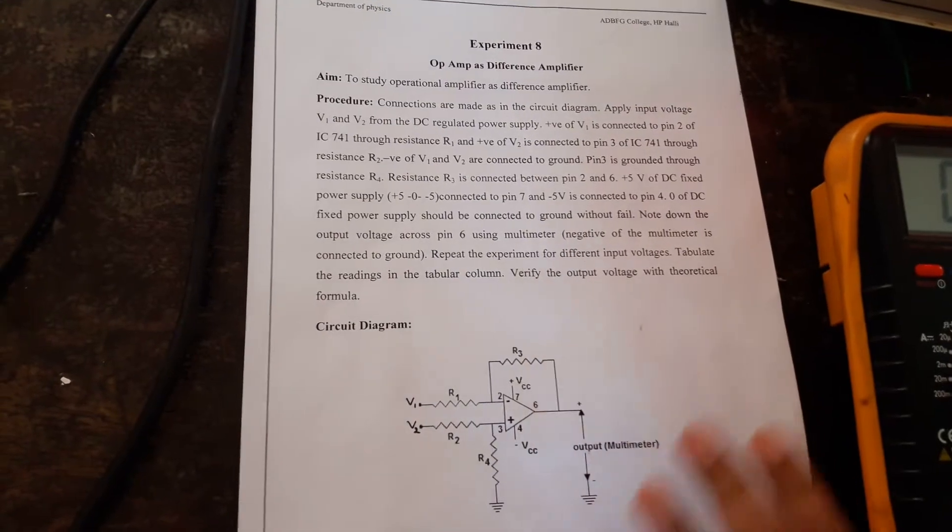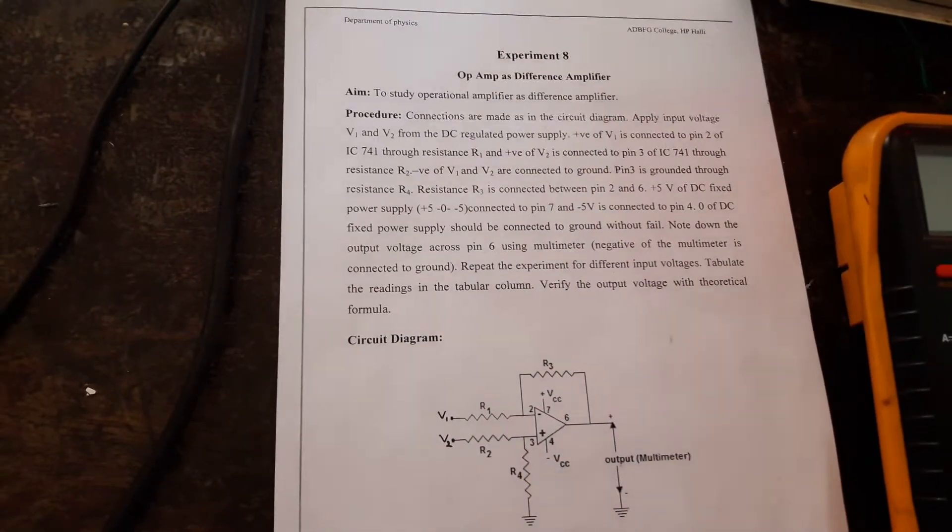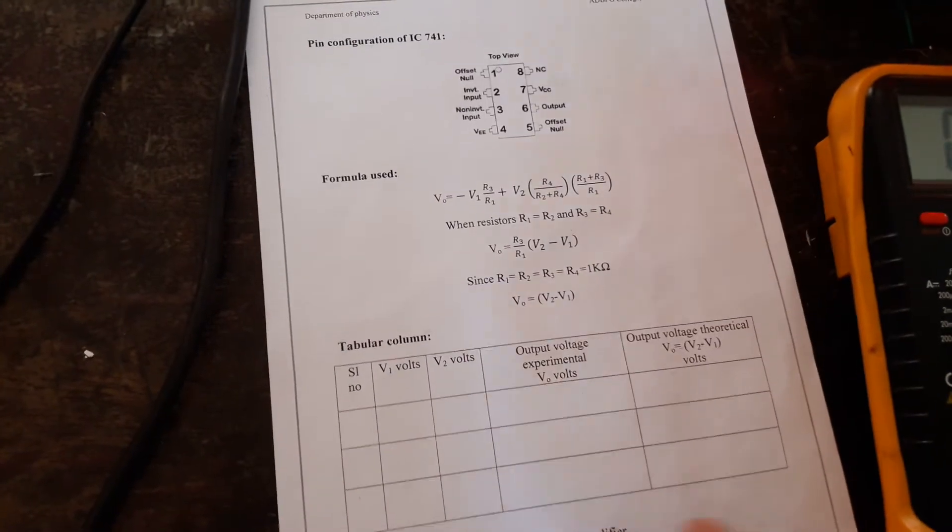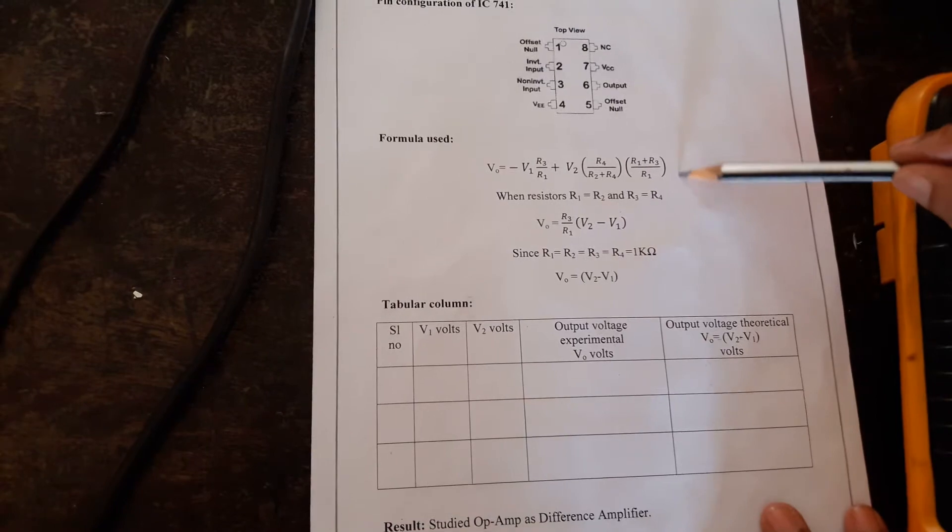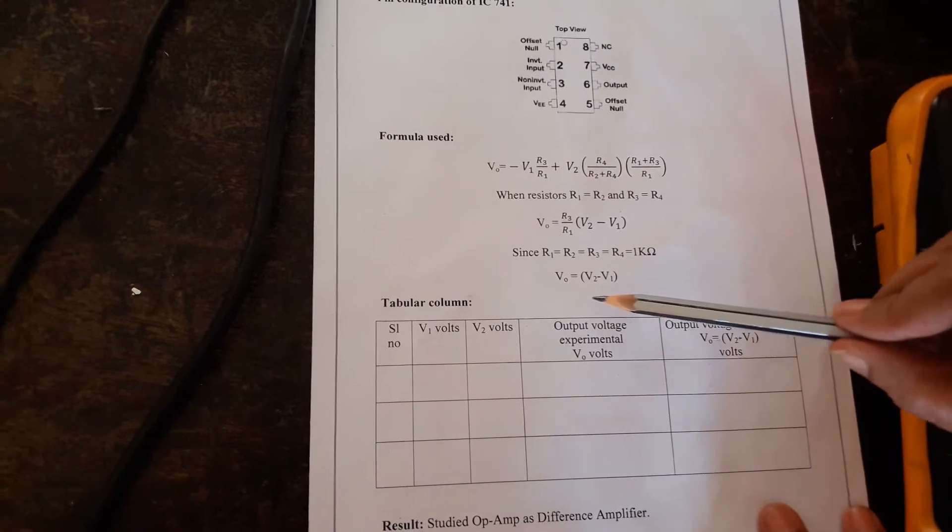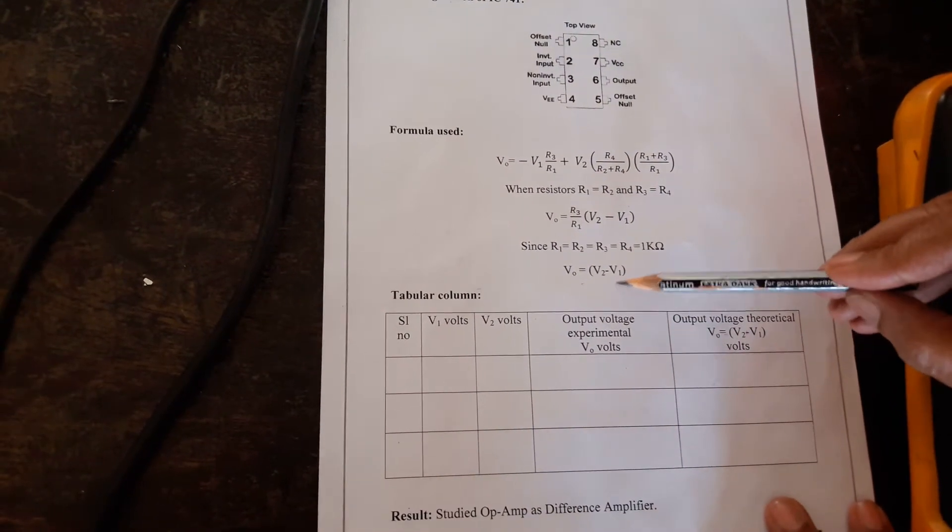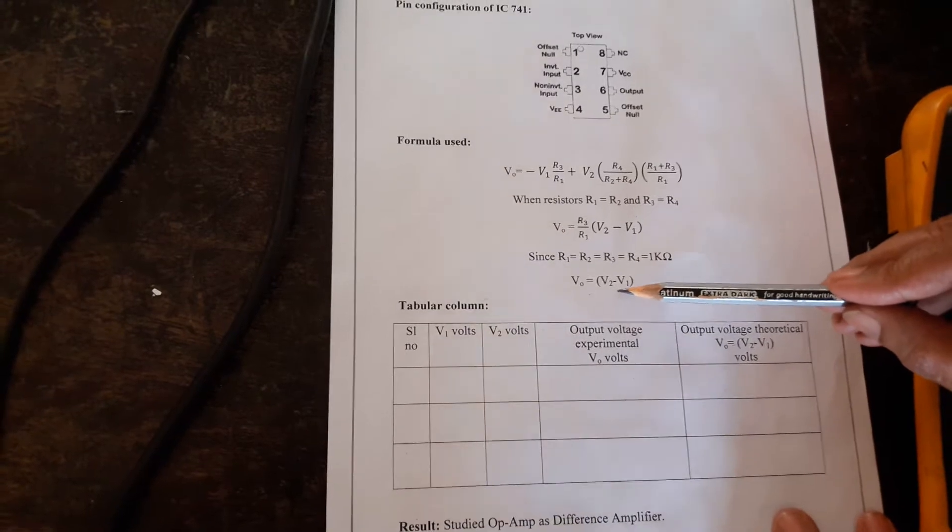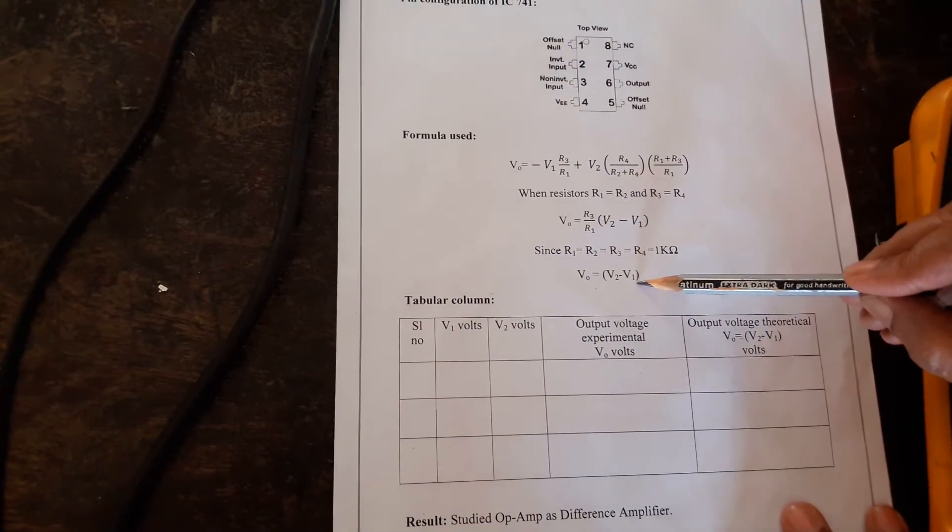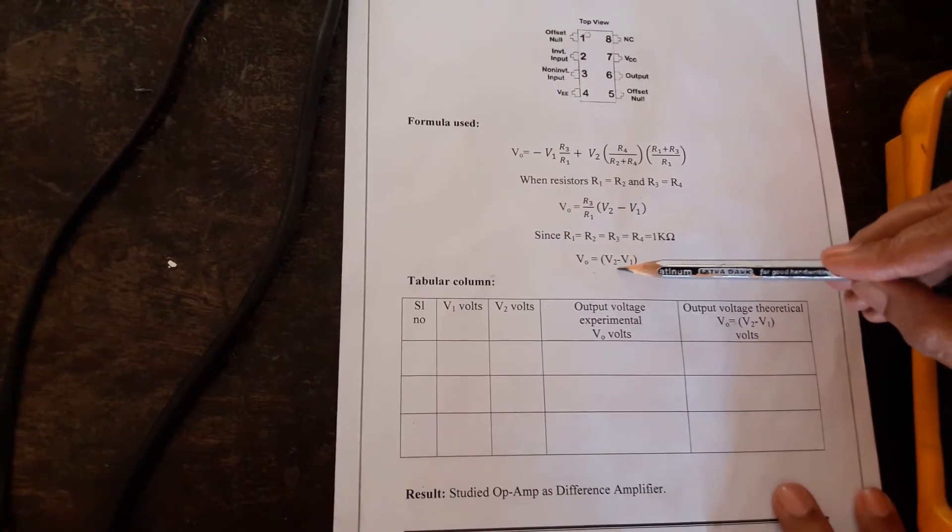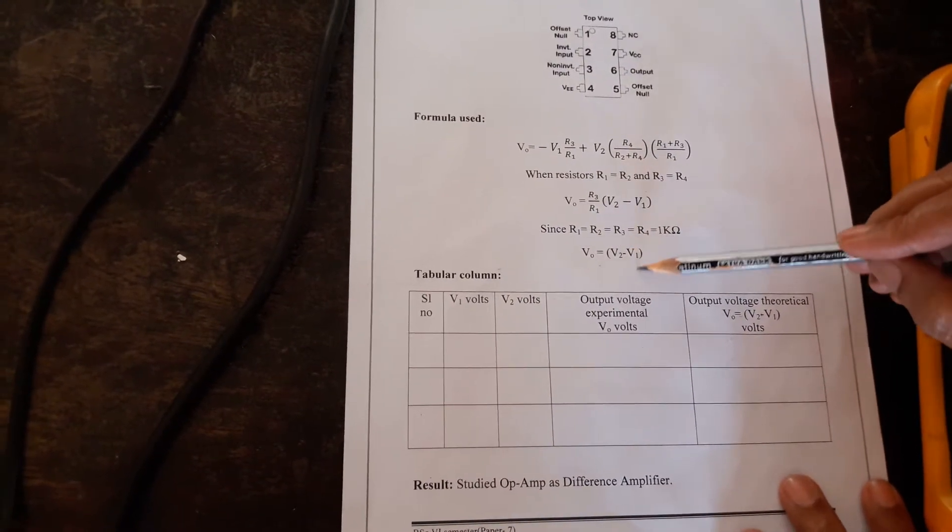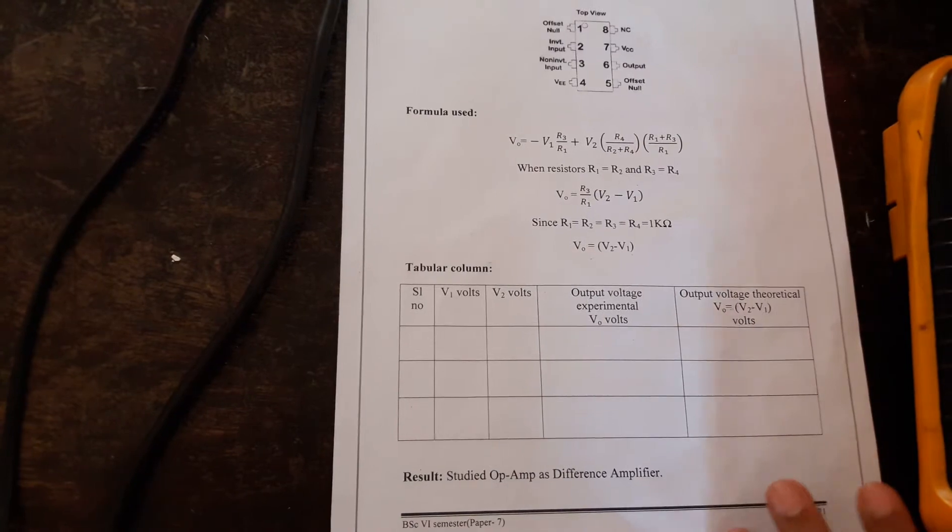This is the circuit diagram, the precision is here and the theoretical formula for the op-amp as difference amplifier is given here. The output will be the difference in the inputs V2 minus V1. Only two inputs we have taken here, so the output is V2 minus V1. This we are going to show in this experiment.